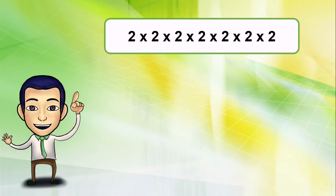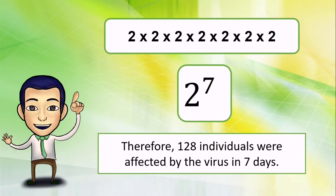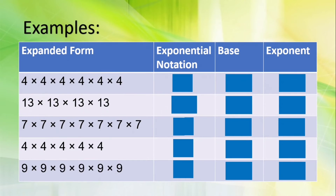I have here an expanded form wherein two is multiplied by itself seven times. Going back to the mathematical problem earlier, this is the answer to the second question. Therefore, 128 individuals were affected by the virus in seven hours. We get the answer by multiplying two by itself seven times. Now, let's practice how to write exponential notation based on the given expanded form.